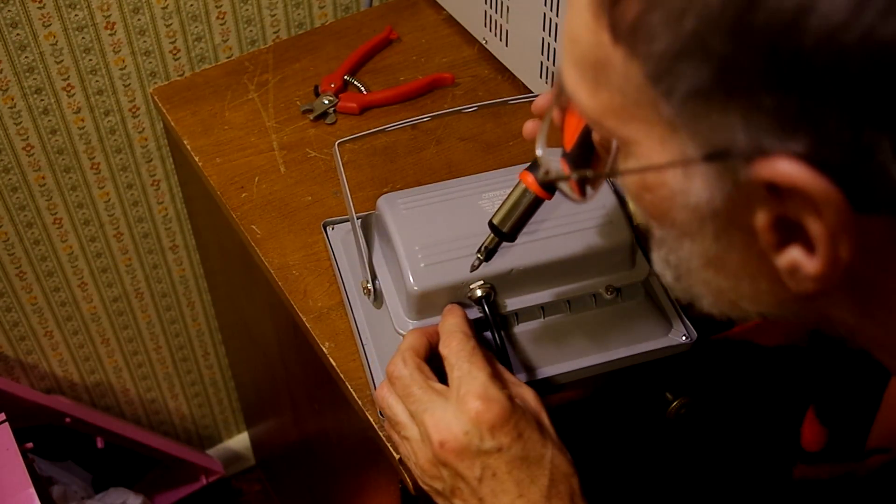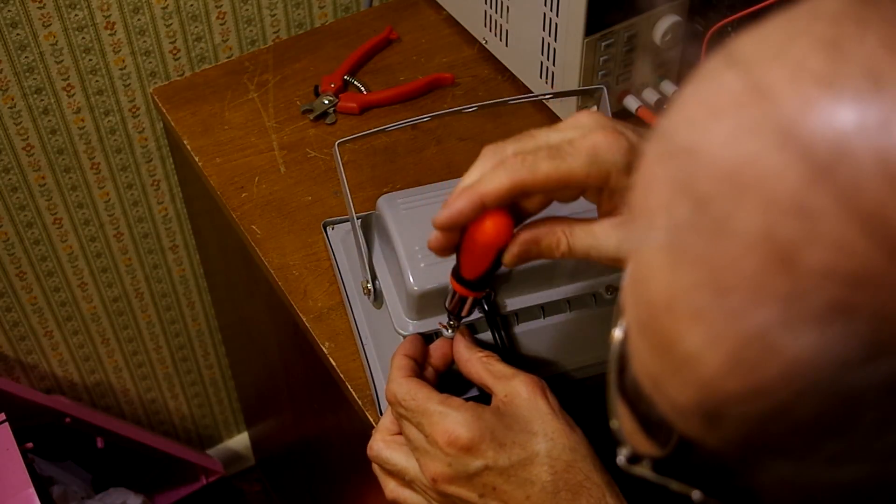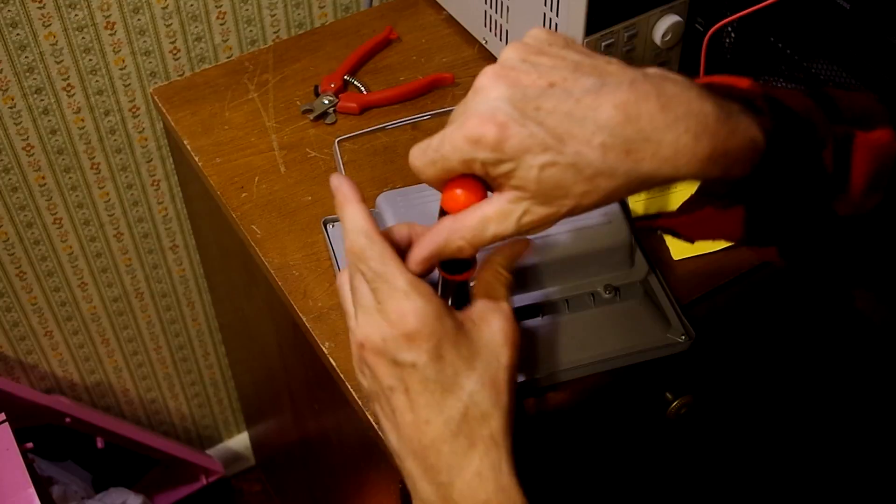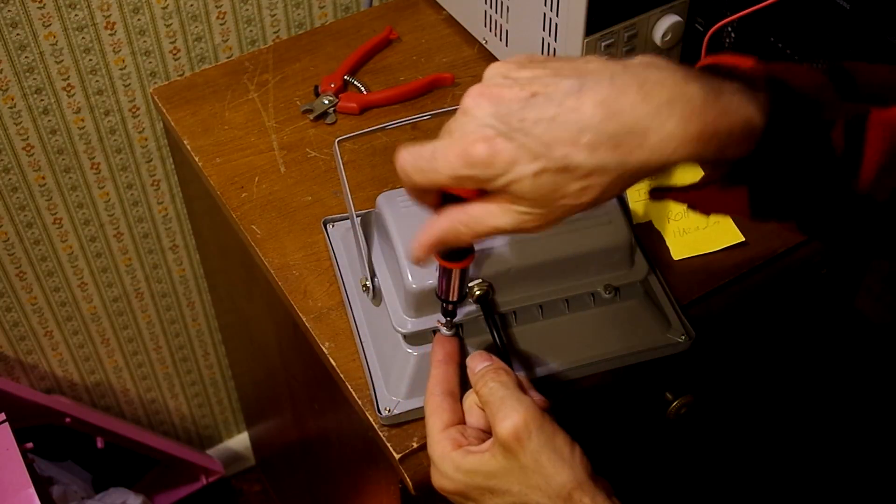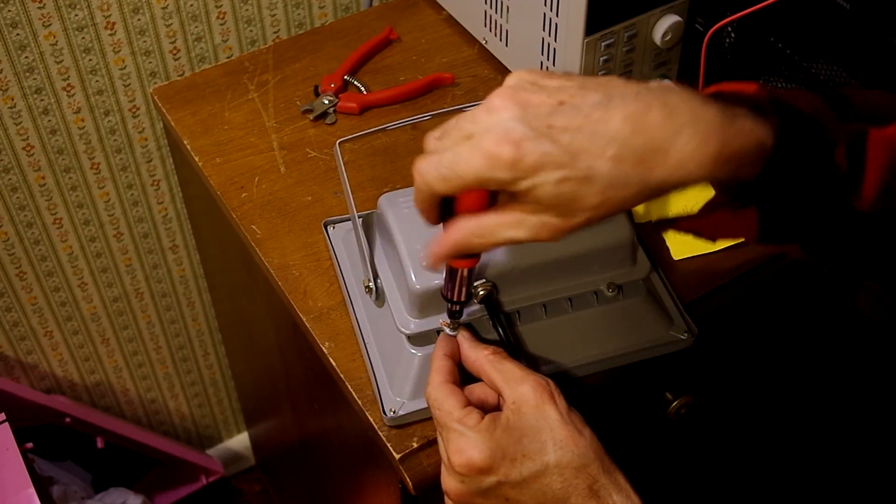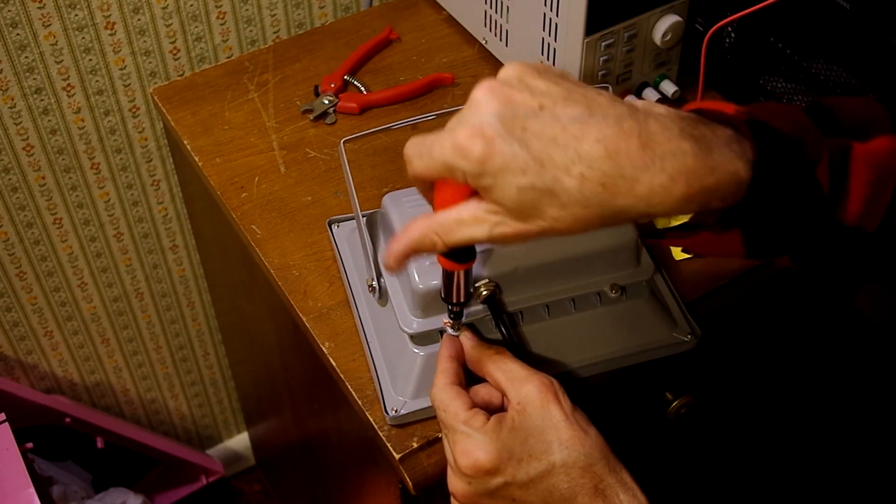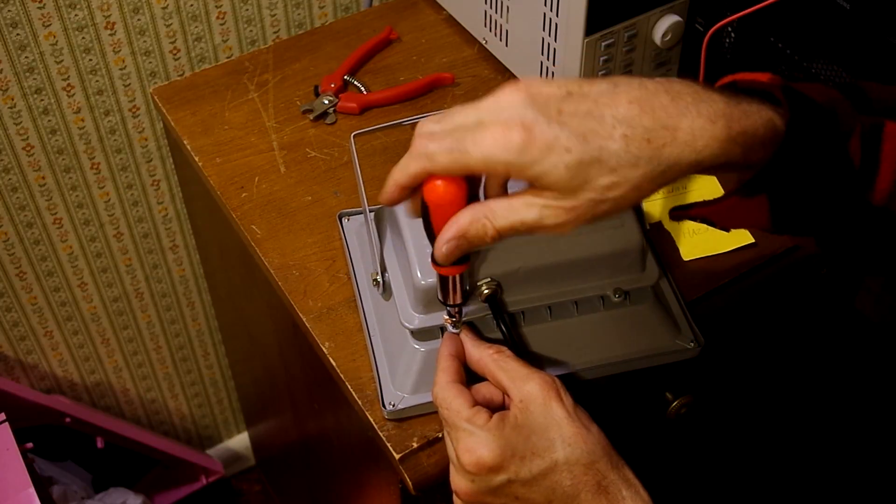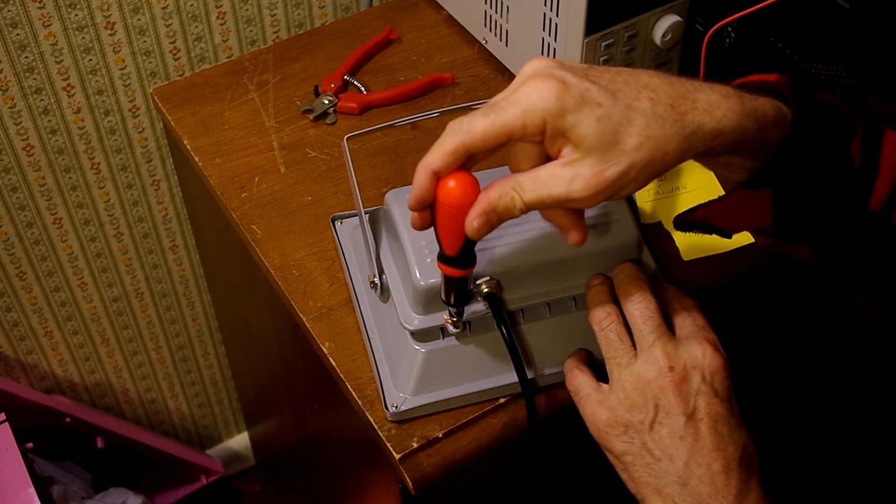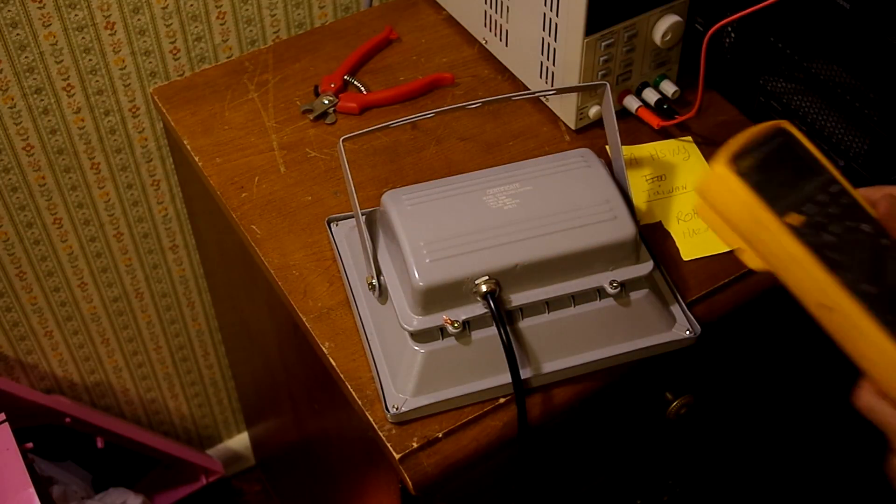By the way, the little strain relief thing worked really good for the computer cord. And I don't have a lug, so I'm just putting the earth ground by the screw and screwing it on. When I'm done, I'm going to check the continuity here to make sure that the earth ground works.